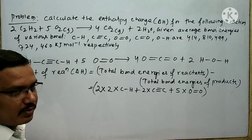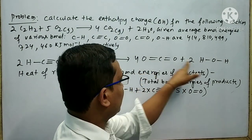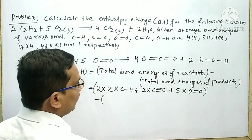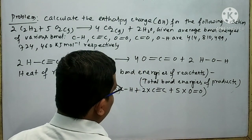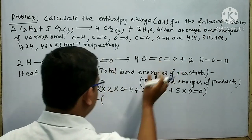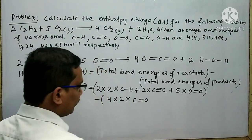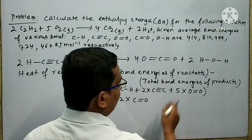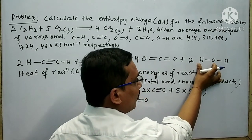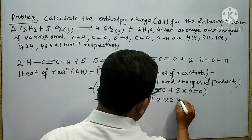Next, I want to find out the total bond energy of the products, so I write minus. For carbon dioxide, there are two C=O bonds per molecule, and four molecules are present, giving 4×2×(C=O). The other product is water; in each water molecule there are two O-H bonds, and two molecules are present, giving 2×2×(O-H).